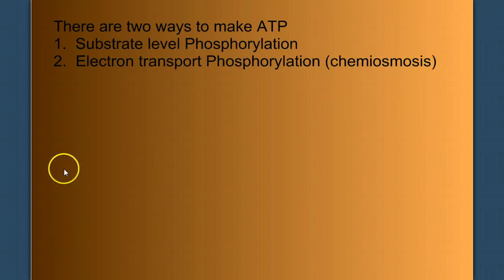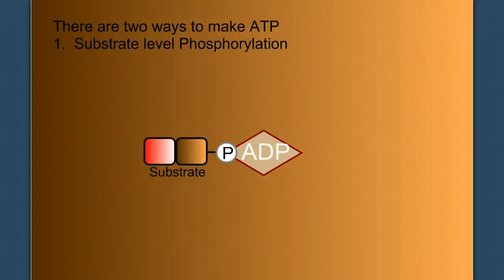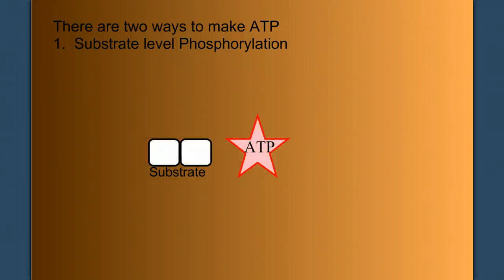Now let's look at what substrate level phosphorylation looks like. In substrate level phosphorylation, a substrate directly hands ADP a phosphate to become ATP. Let's watch that again. We have substrate level phosphorylation. ADP was phosphorylated into ATP with a direct transfer of a phosphate group. So we call this substrate level phosphorylation. That substrate donates the phosphate.